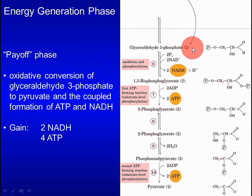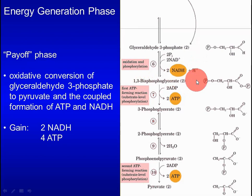Glyceraldehyde-3-phosphate is a high-energy compound. In the second phase, it undergoes an oxidation and transfer reaction to generate two high-energy compounds: NADH and 1,3-bisphosphoglycerate. This is followed by two transfer reactions in which the phosphate group is transferred to ADP, giving rise to ATP. These two reactions are called substrate-level phosphorylation.